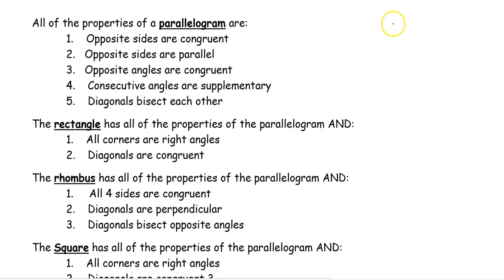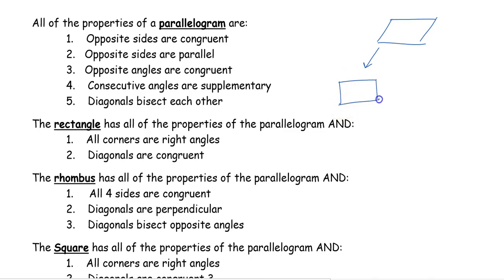We have a parallelogram with those five properties. A rectangle is a kind of parallelogram, so all rectangles are parallelograms, but not all parallelograms are rectangles. Rectangles are going to have all five of those properties.